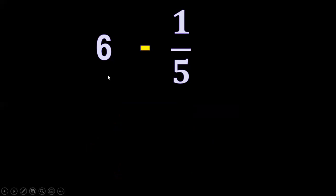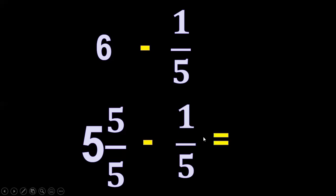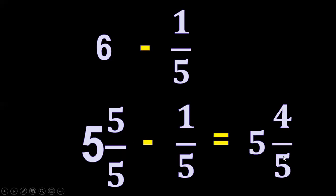Another one: six minus one-fifth. Rename it — borrow one, then divide into five equal parts. The remainder is five, and what we divided is five over five. Copy minus one-fifth. Subtract the whole number: five minus zero equals five. Then five minus one equals four, and copy the denominator five. So the final answer is five and four-fifths.